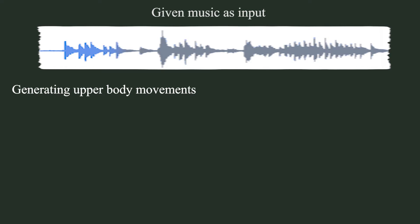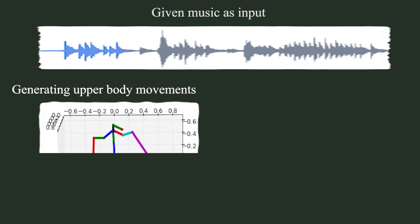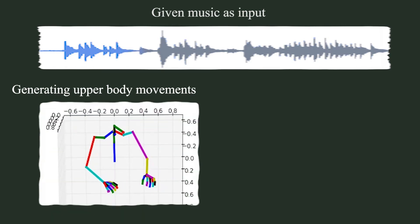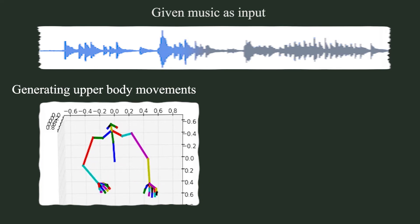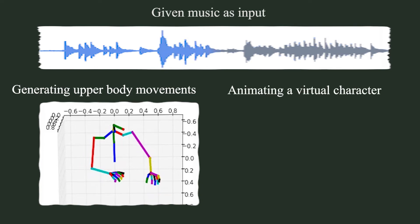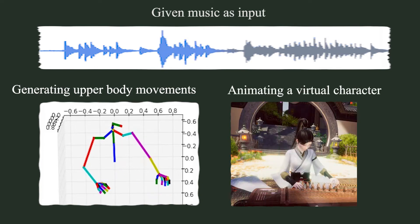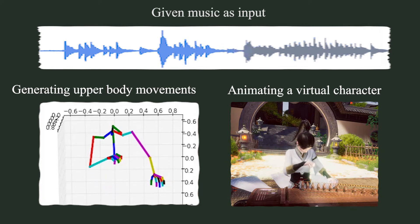The animation trajectories of upper body joints are automatically generated, then they are used to animate a virtual character.